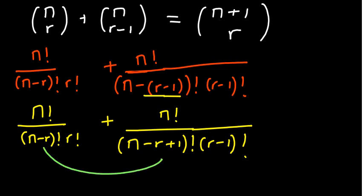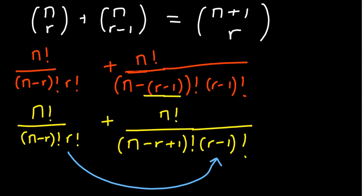If you check the first two bracket terms, they are related in a certain way — the one on the right is just one higher than the other. And if you compare r and r minus 1, one is just higher by 1. So r itself is higher, and r minus 1 is less by 1.